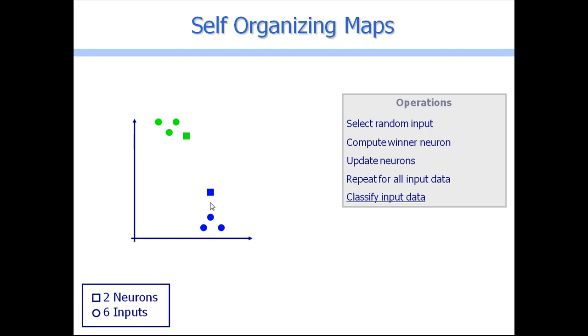And along the iterations or the epochs, all these neurons will try to fit the model that is behind the data. That's it, self-organizing maps.